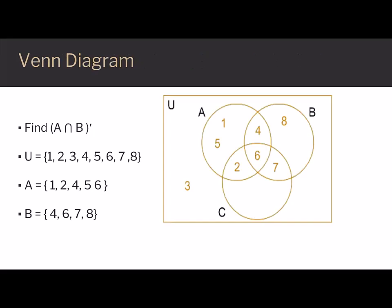Drawing a Venn diagram will be very helpful to solve for this. We'll enter our values in set A: 1, 2, 4, 5, and 6, and then the numbers 4, 6, 7, and 8 for set B.